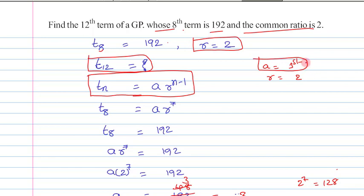To find the value of a, we are going to make use of T8 equals 192. By using the nth term formula of a GP, we can write T8 as a times r to the power of 7, and we already know that T8 equals 192 from the question.